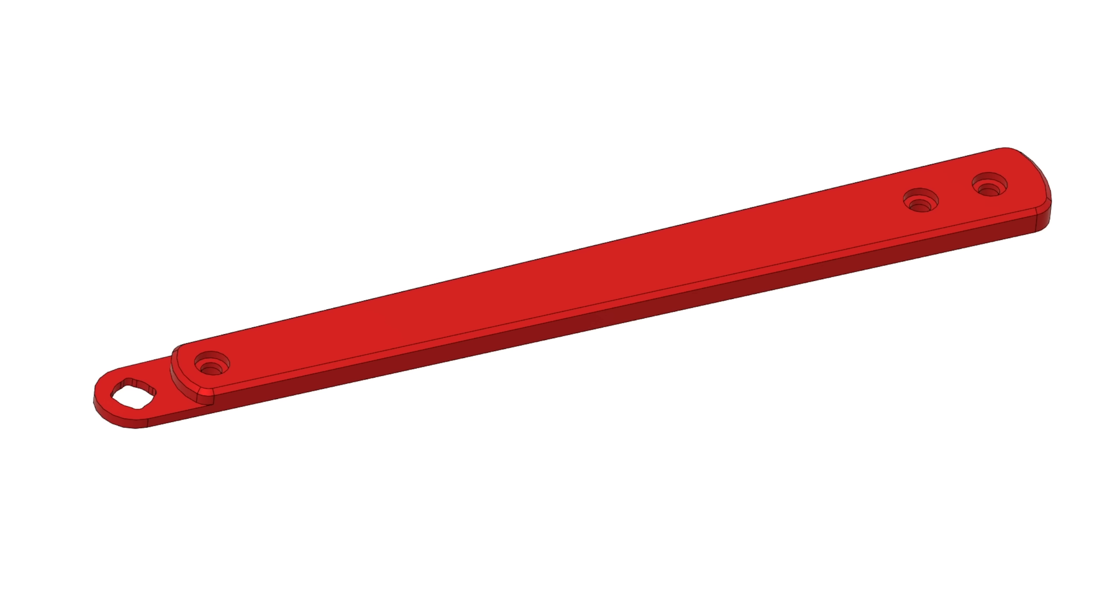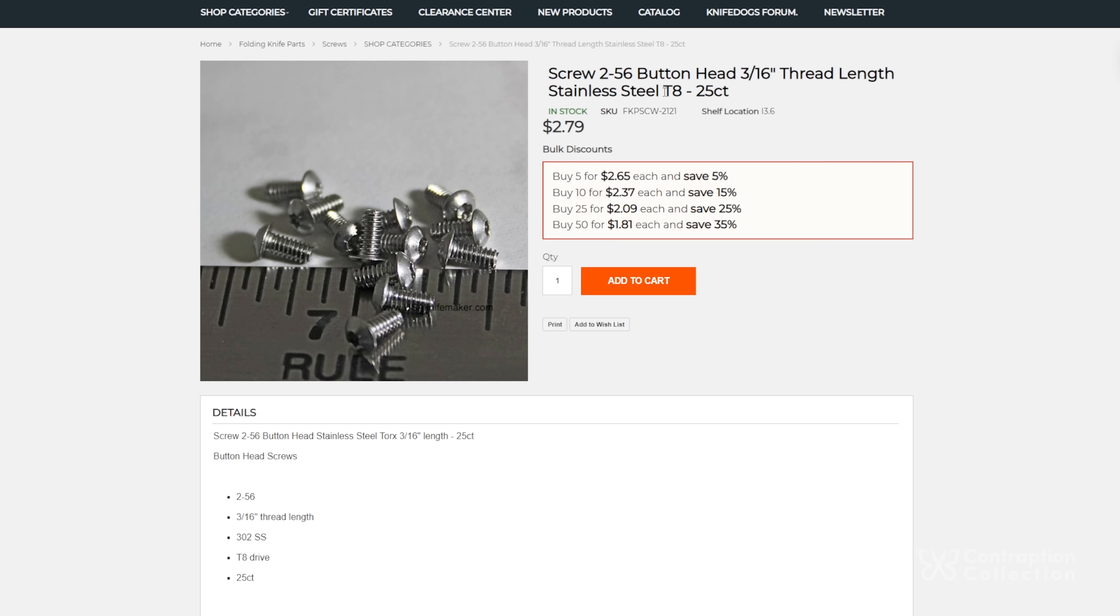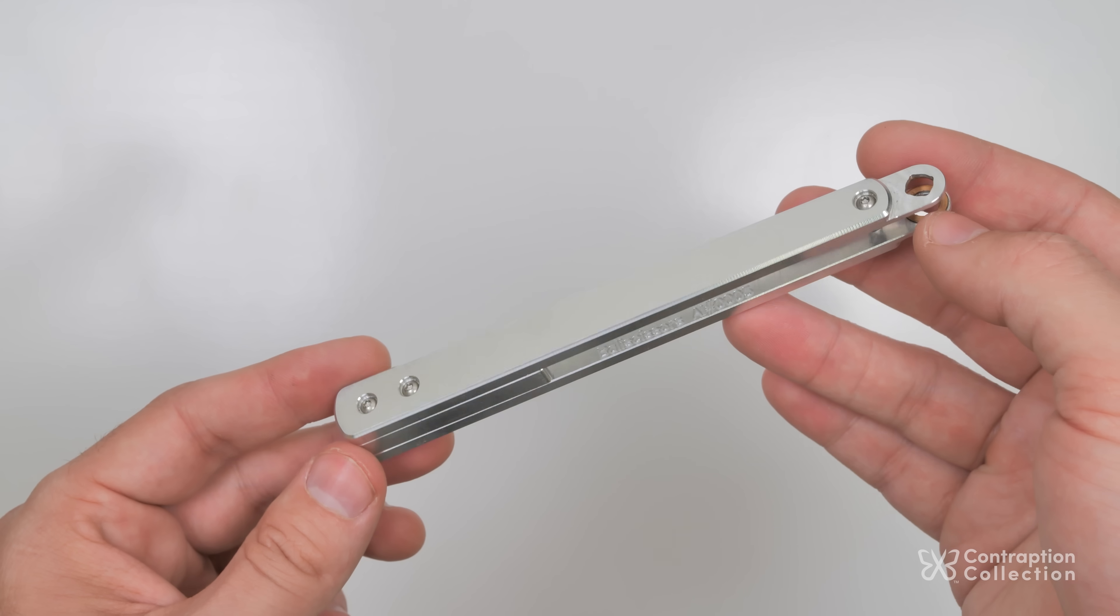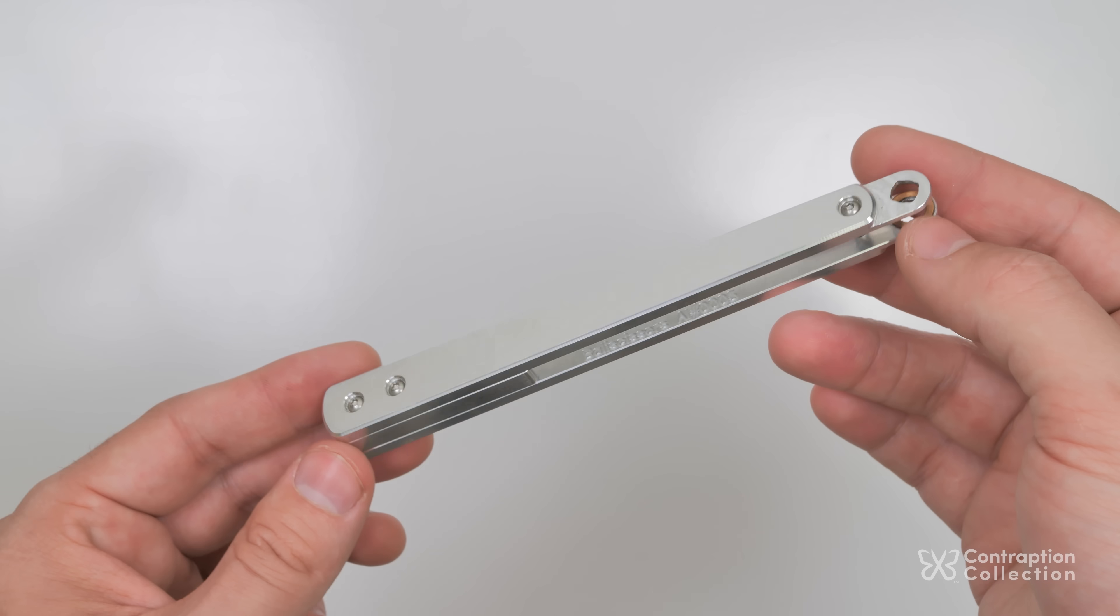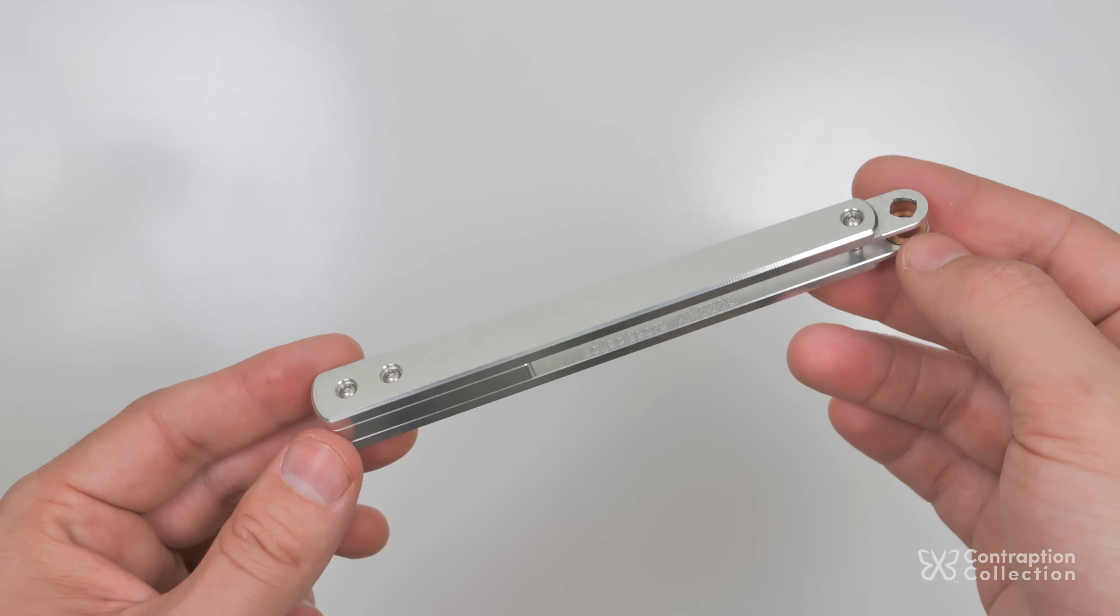Jimping on the spacers, a bigger chamfer or radius on the edge of the handles, maybe different screws, stuff like that. The design of the aluminum handles was only meant to be simple for prototyping, so these were easy changes to make.